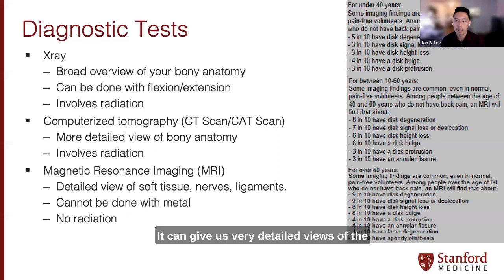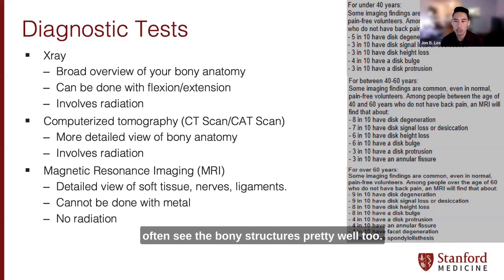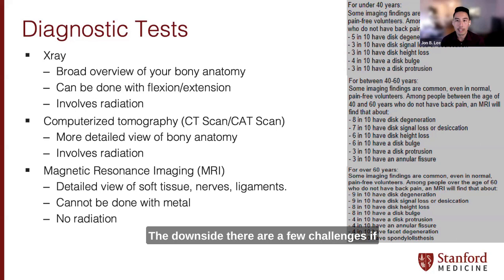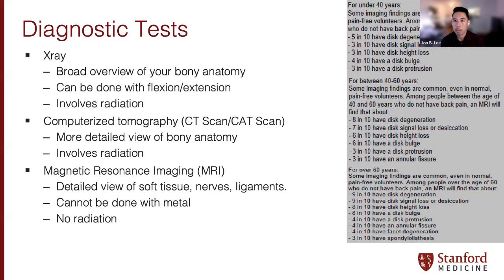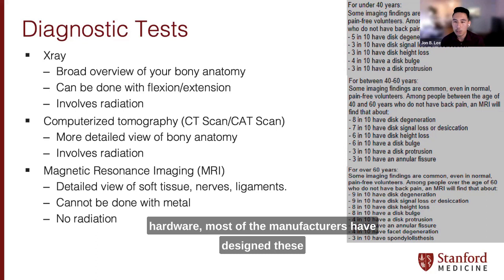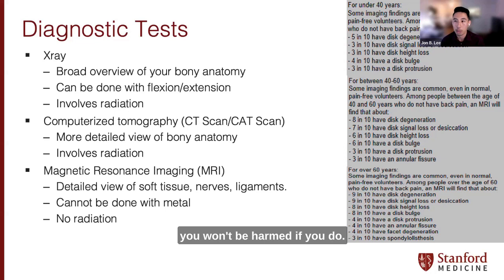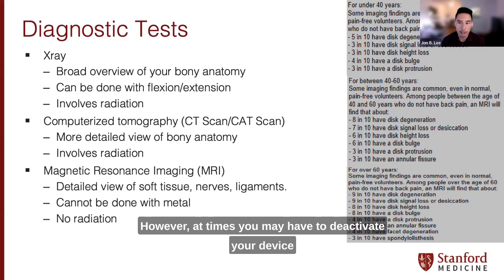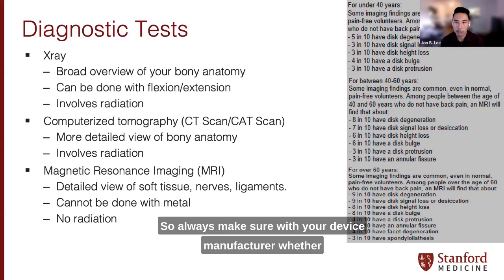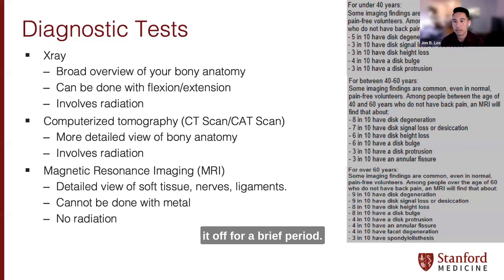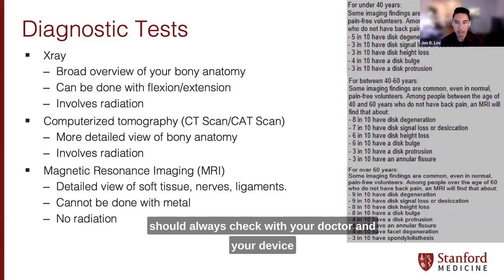The MRI is probably the most advanced form of imaging we have. It gives us very detailed views of soft tissues — nerves, ligaments — and we can see bony structures well too. A challenge is that if you have metal in your body, it can degrade MRI images. Most medical implants like pacemakers or surgical hardware are now designed to be MRI-compatible, but you may need to deactivate or reprogram your device. Always check with your device manufacturer whether it's compatible and whether any reprogramming is needed.